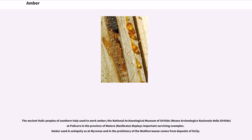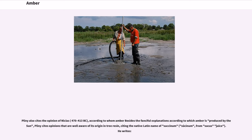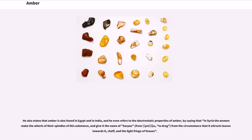The ancient Italic peoples of southern Italy used to work amber; the National Archaeological Museum of Siritide (Museo Archeologico Nazionale della Siritide) at Policoro in the province of Matera, Basilicata, displays important surviving examples. Amber used in antiquity, as at Mycenae and in the prehistory of the Mediterranean, comes from deposits of Sicily. Pliny also cites the opinion of Nicias (470–413 BC), according to whom, besides fanciful explanations of amber being produced by the sun, Pliny cites opinions aware of its origin in tree resin, citing the native Latin name succinum from succus.